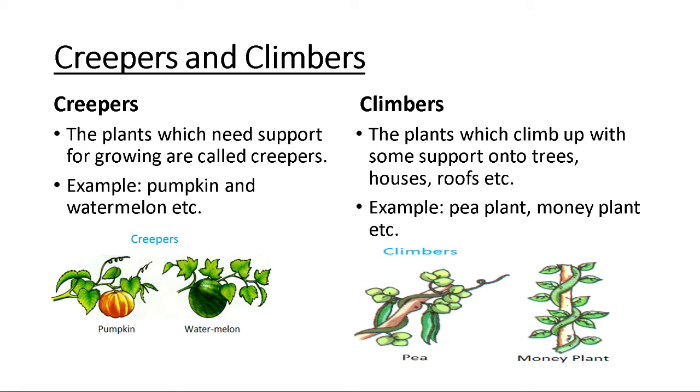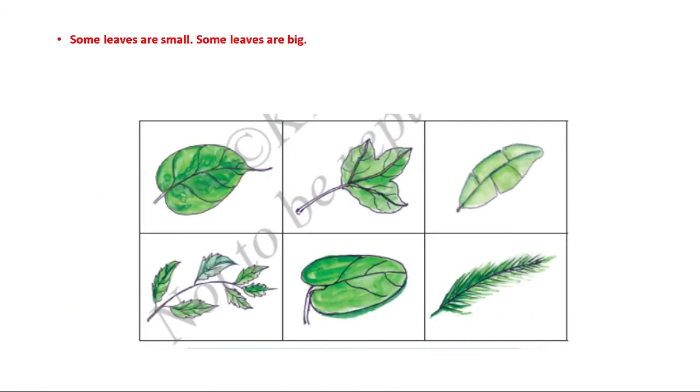Here you can see leaves. There are different shapes of leaves, different sizes of leaves. Some leaves are small, some leaves are big. The shape of the leaves is also different. And you can see the color. Generally all leaves are green in color. Remember, all leaves are green in color generally.